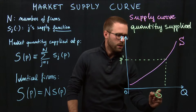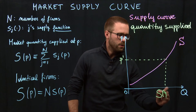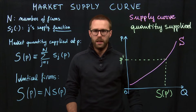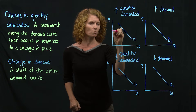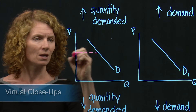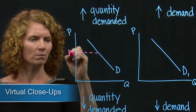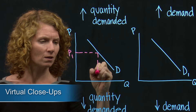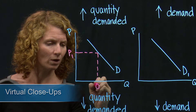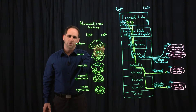The aggregate quantity supplied is going to be the number capital S of p prime. So let's suppose that the initial price is p1 and the initial quantity is q1.